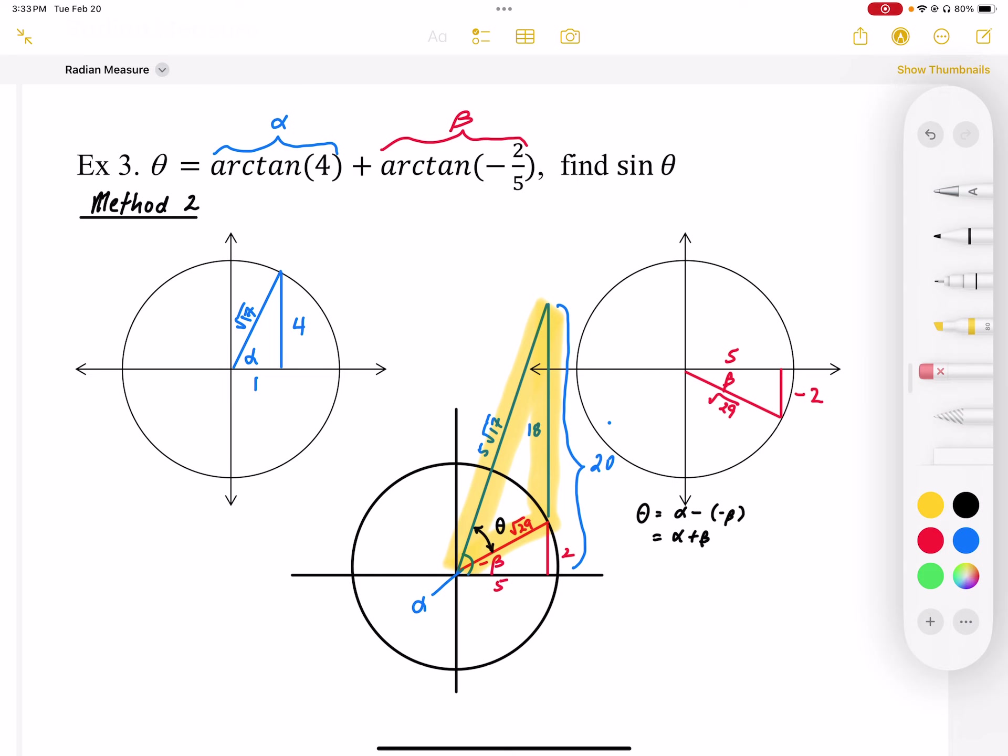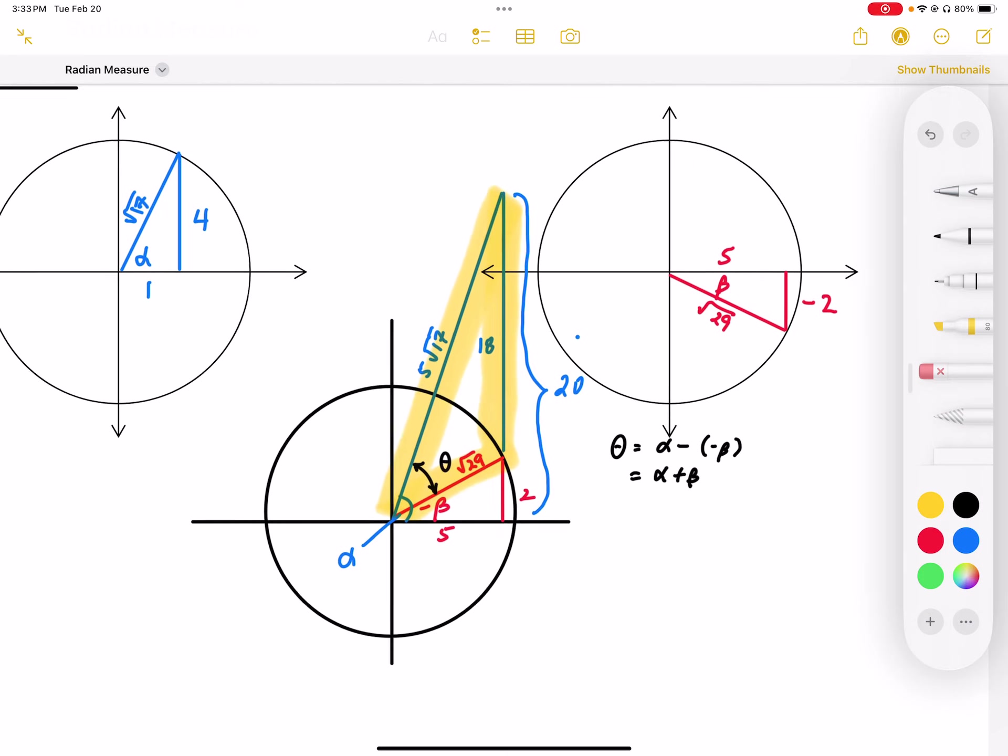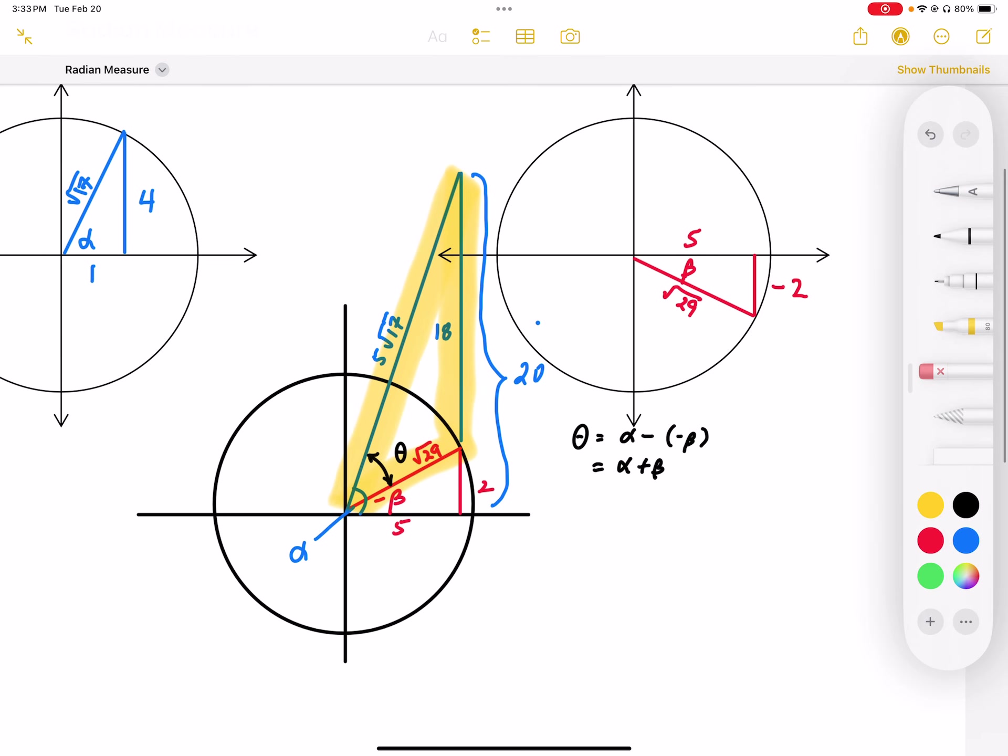Angle alpha, or angle theta, is going to be alpha plus beta. So to do this, what we're going to do is, first of all, draw angle beta in quadrant one, which is going to make it the opposite of beta.